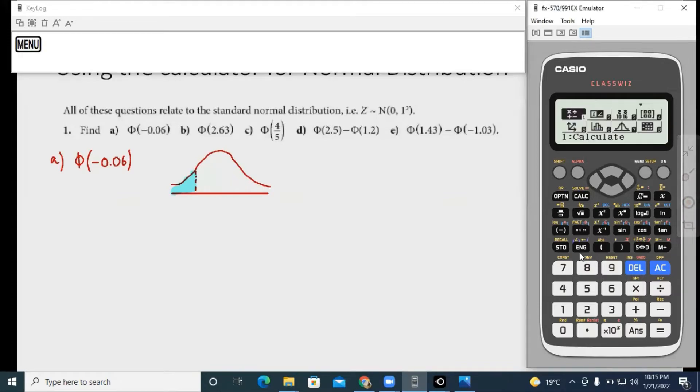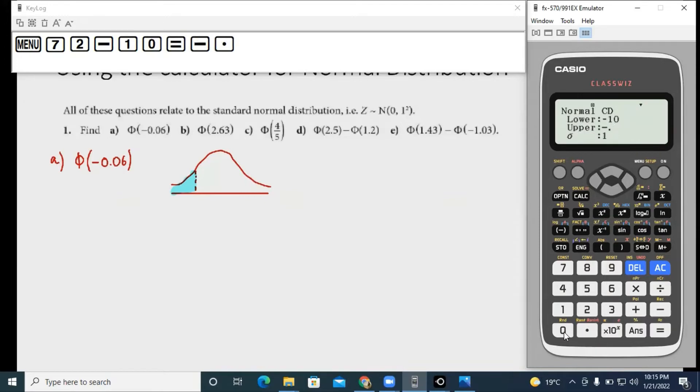You go again to menu, press 7, go to the normal cumulative distribution. Again you can insert the lower as minus 10, press equals to, go to the upper and insert minus 0.06.